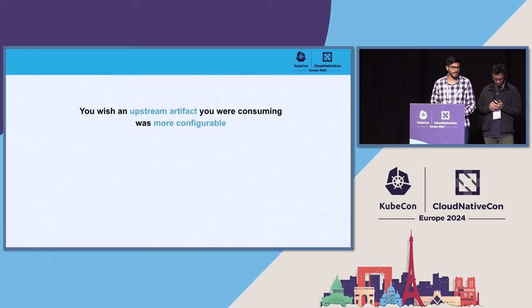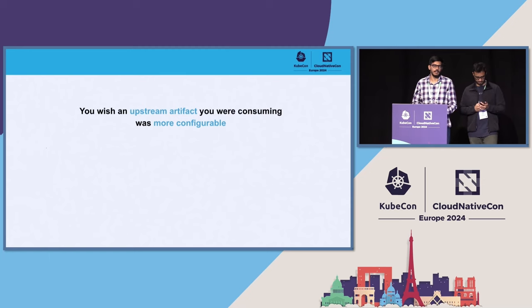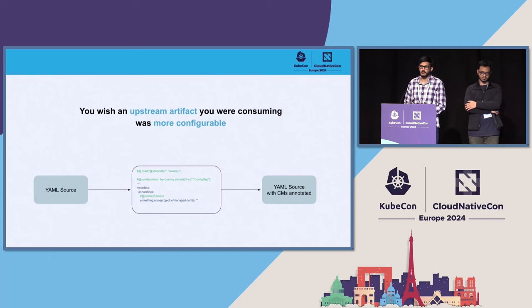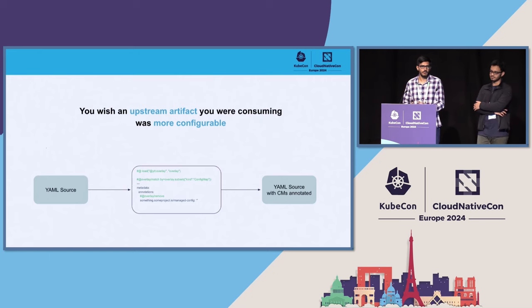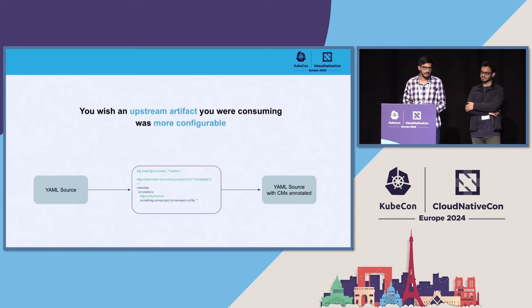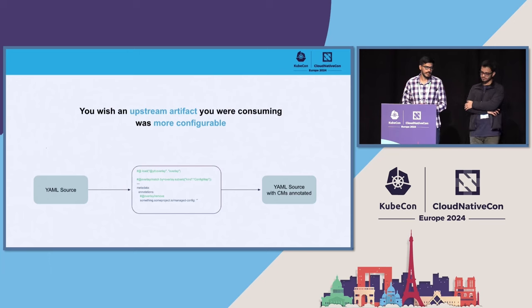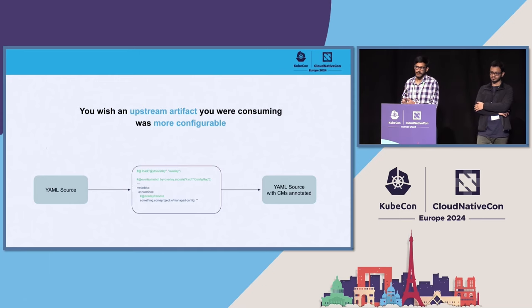For example, you wish an upstream artifact you were consuming was more configurable. This artifact could be a Helm chart, or it could also be a published release. We have a tool called YTT, short for YAML Templating Tool. You can use YTT to shape your existing configuration files into a more configurable config. YTT has overlays which are based on a Python dialect, so it looks pretty similar to Python itself. And since it's based on a Python dialect, whatever comes out of YTT is guaranteed to be valid YAML.